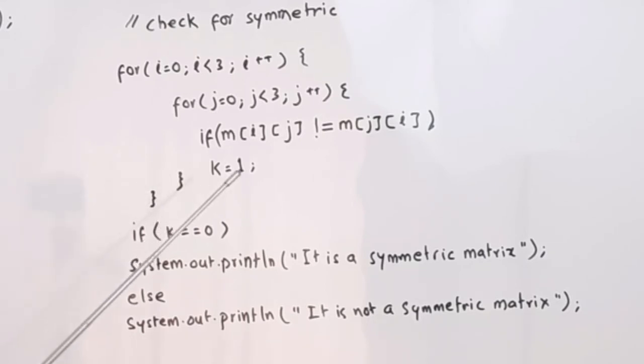So for that we will use the nested for loop: for(i=0; i<3; i++), for(j=0; j<3; j++). If m[i][j] is not equal to m[j][i], we will go through the loop for every number or every location in the array and we will check if the number at location m[i][j] is not equal to m[j][i].